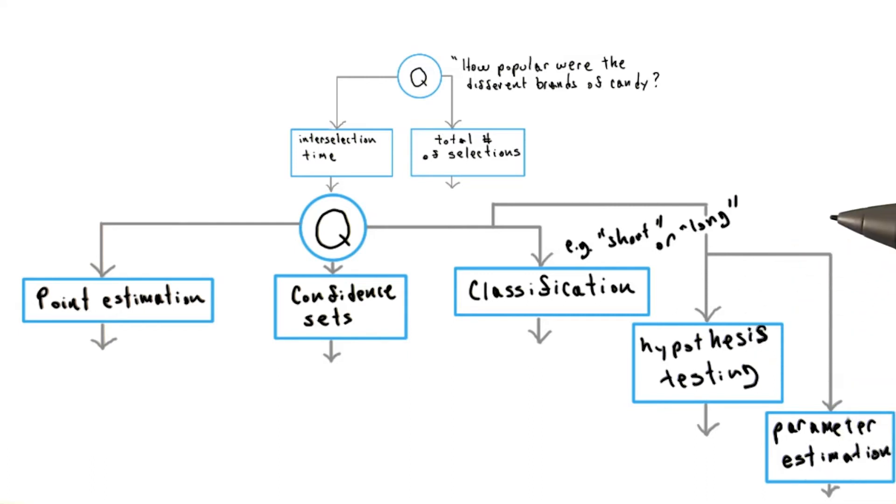Depending on the outcome of later phases, we may return to the question phase to recast the same problem as a different statistical inference problem. For example, we may find a regression estimator we create has a very high variance and thus poor performance, but can be recast as a classifier with very high accuracy.